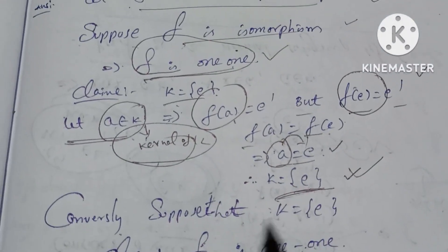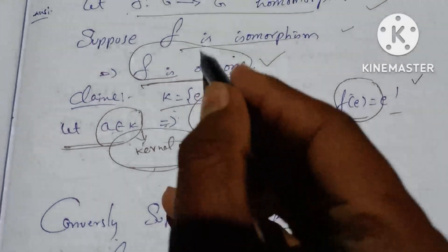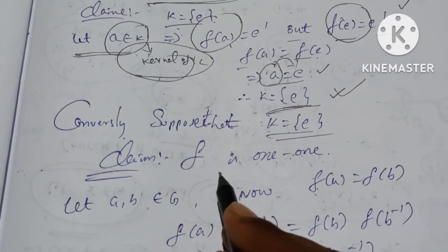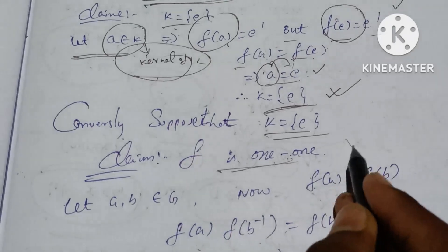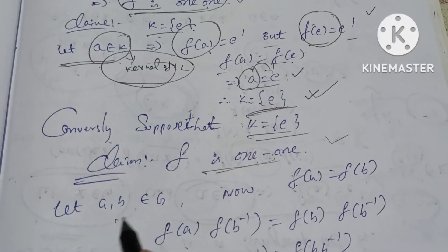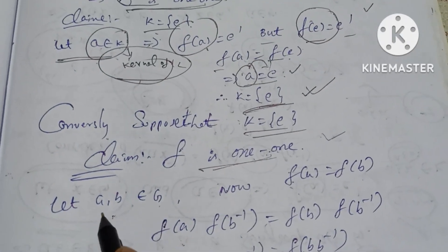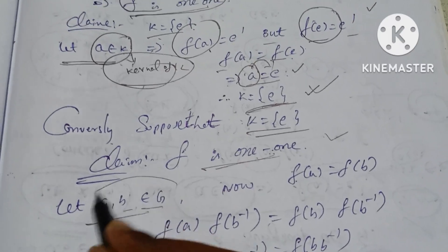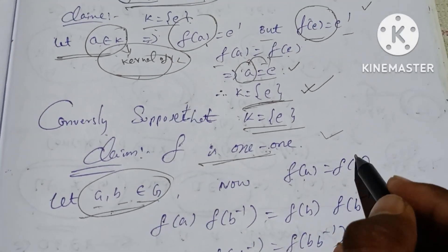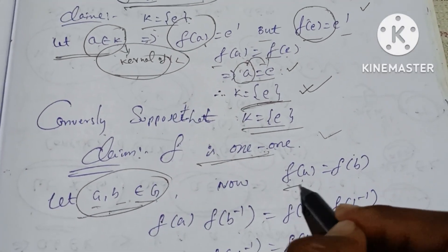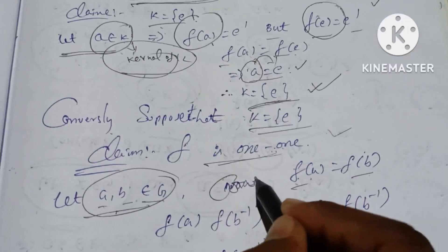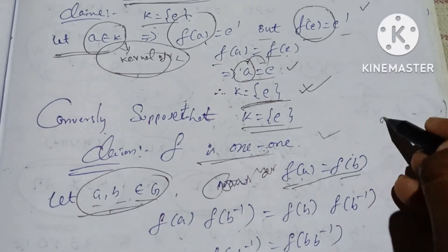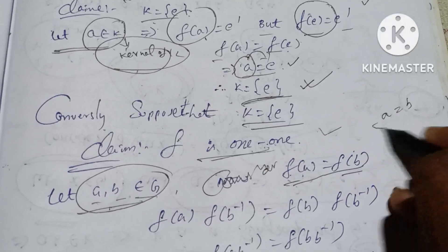Conversely, suppose K equals {E}. Then we want to prove F is one-to-one. To prove F is one-to-one, assume F(A) equals F(B) and show A equals B.